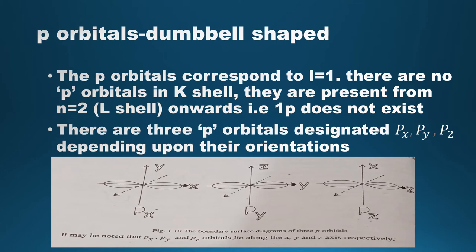The p orbitals correspond to l equals to 1. There are no p orbitals in the K shell — that is, 1p does not exist. The p orbitals are present from n equals to 2, that is from the L shell onwards. All p orbitals have a dumbbell shape. There are three p orbitals designated as px, py, and pz depending upon their orientation. The px orbital lies along the x-axis, py along the y-axis, and pz along the z-axis, as shown in the figure.